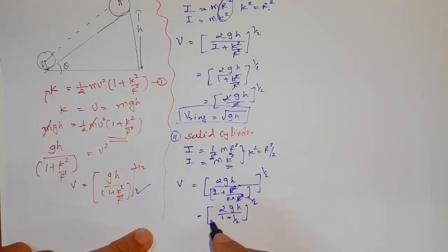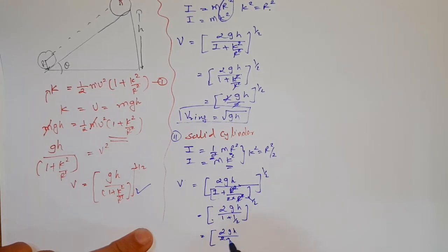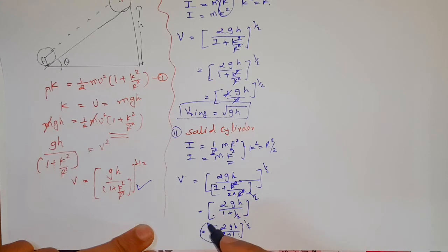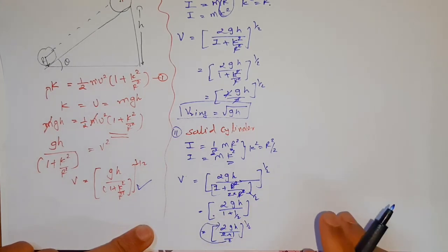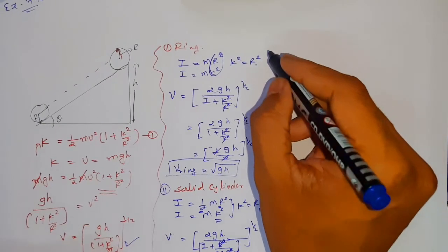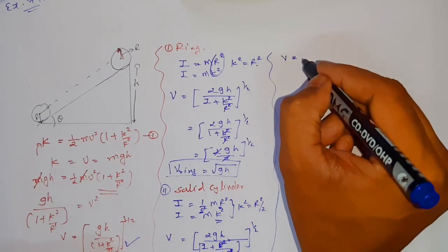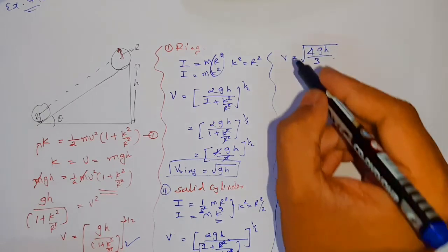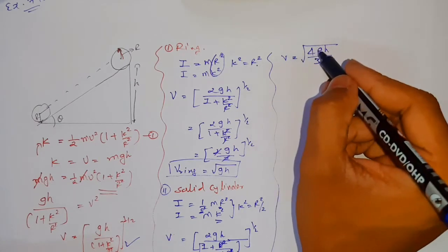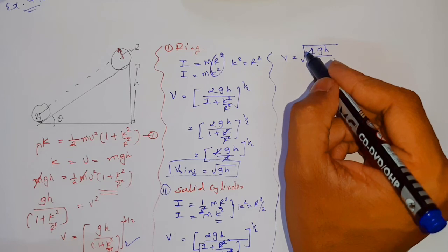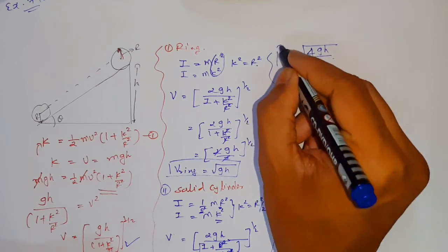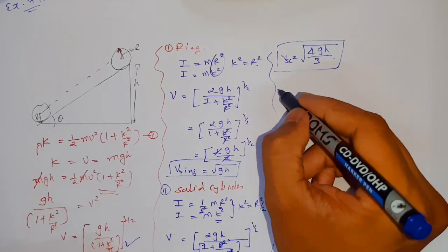Continuing for the solid cylinder: v = √(2gh / (3/2)) = √(4gh/3). So v_solid cylinder = √(4gh/3).